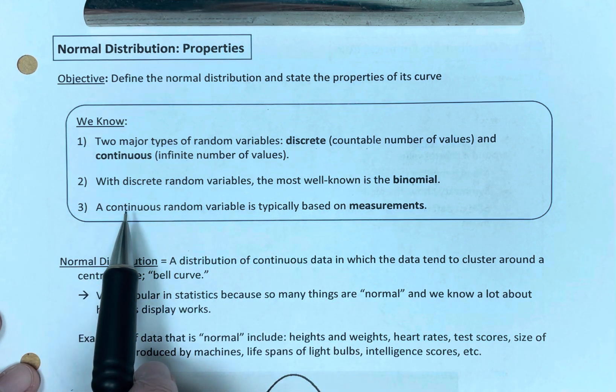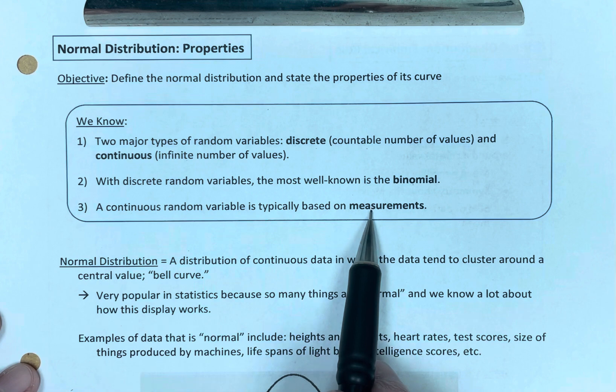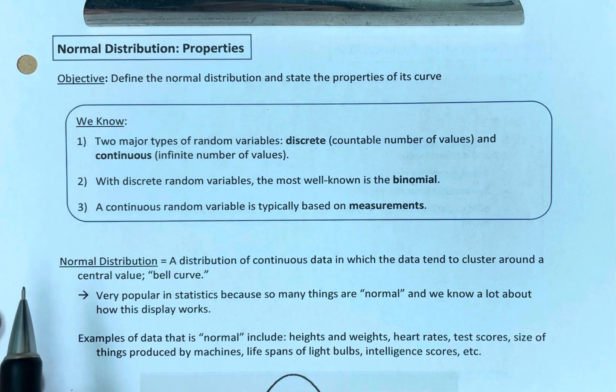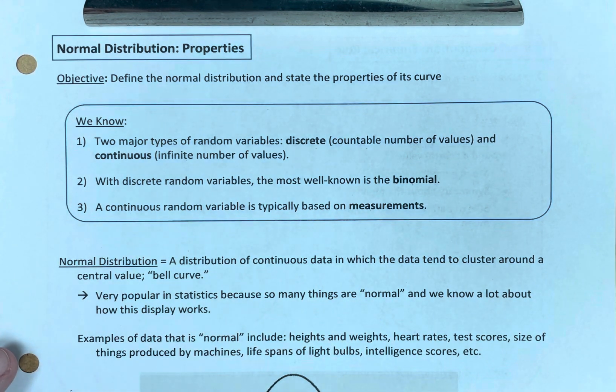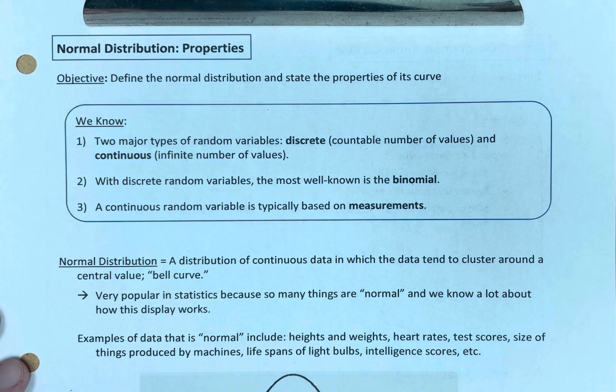And we know that a continuous random variable is typically based on measurements. When we determine if it's continuous or not, if the variable is measurable, such as miles, it is a continuous random variable.